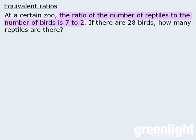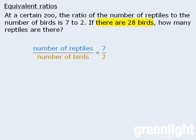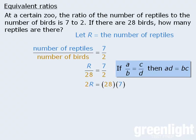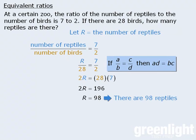The question tells us the ratio of reptiles to birds is seven to two. Since there are 28 birds, we replace the number of birds with 28. We let r represent the number of reptiles and replace the number of reptiles in our ratio with r. This ratio equals seven to two, giving us an equation we can solve. Applying cross-multiplication and simplifying, then dividing both sides by two, we get r equals 98. This means there are 98 reptiles at the zoo.